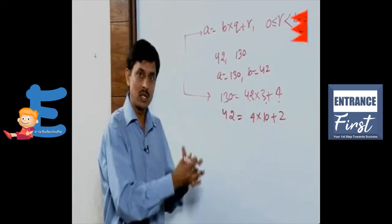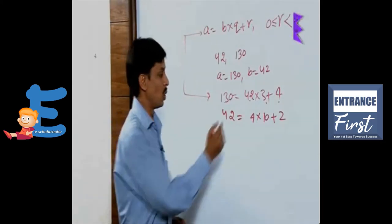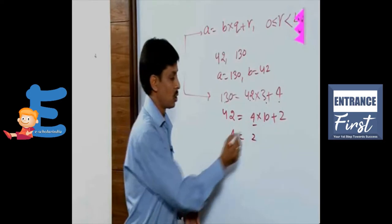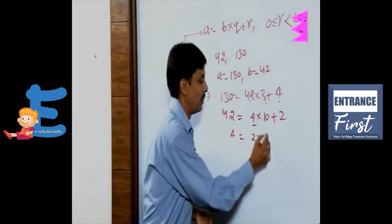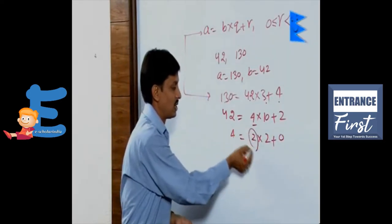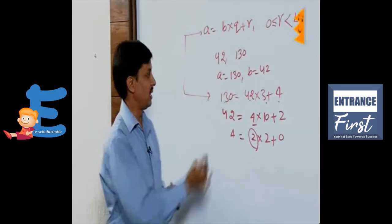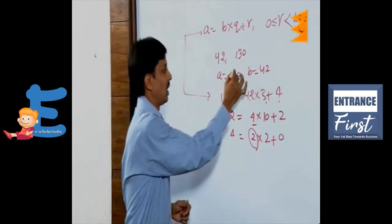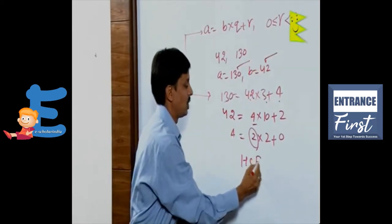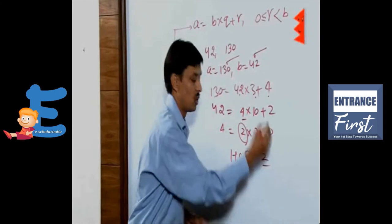In our next step, we take 4 as the dividend and 2 as the divisor. The quotient will be 2 and the remainder will be 0. The last divisor when the remainder becomes 0 is known as the HCF. Hence, the HCF of 130 and 42 is 2.